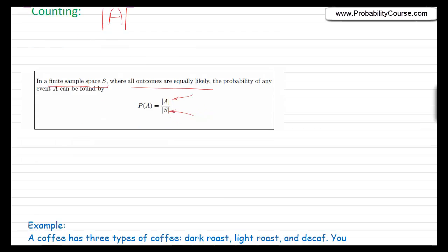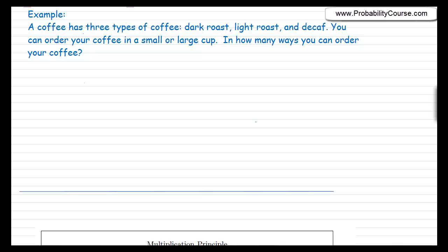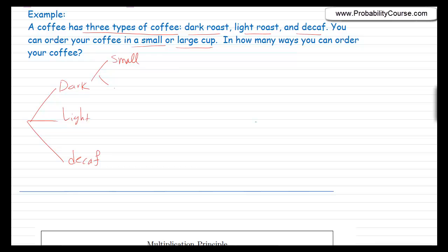So let's start with an example. A coffee shop has three types of coffee: dark roast, light roast, and decaf. You can order your coffee in a small or a large cup. So the question is, in how many ways can you order your coffee? Let's count them. Your coffee can be dark roast, light roast, or decaf, and then you can order it in a small or large cup. We see that there are six possibilities.